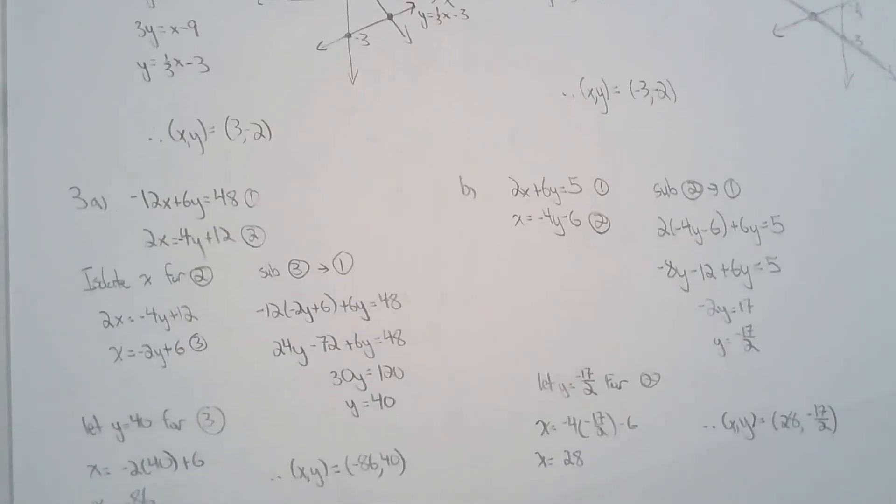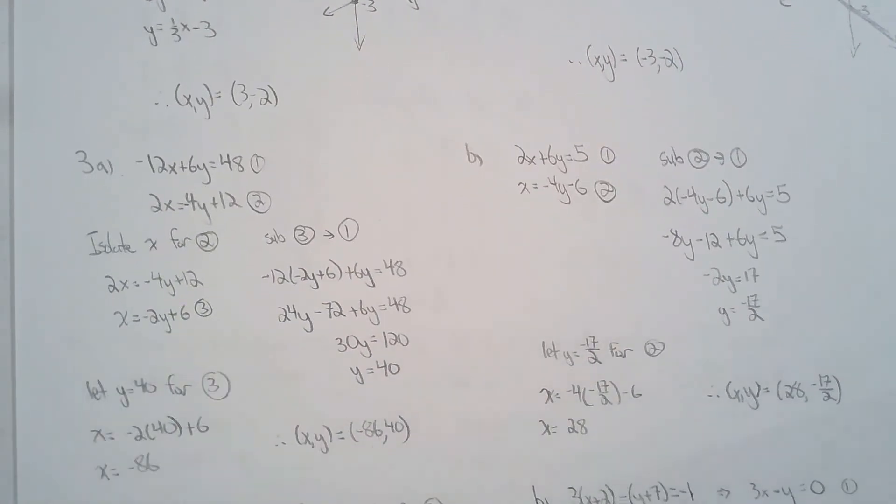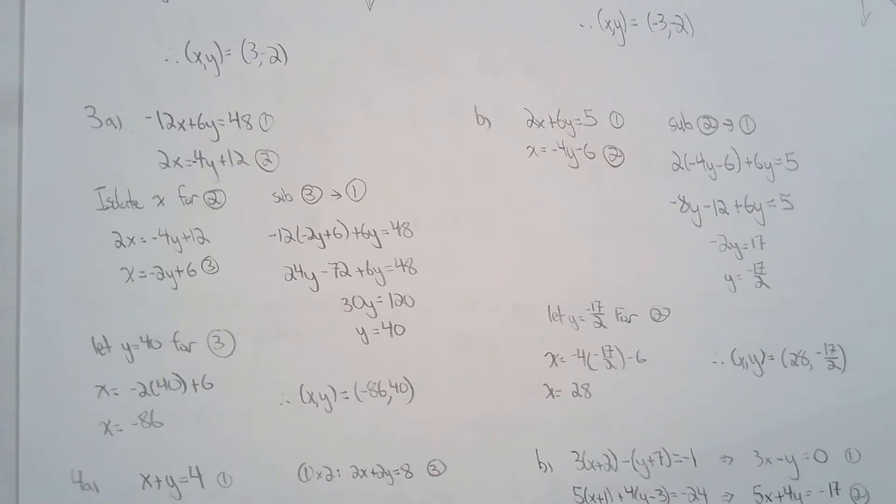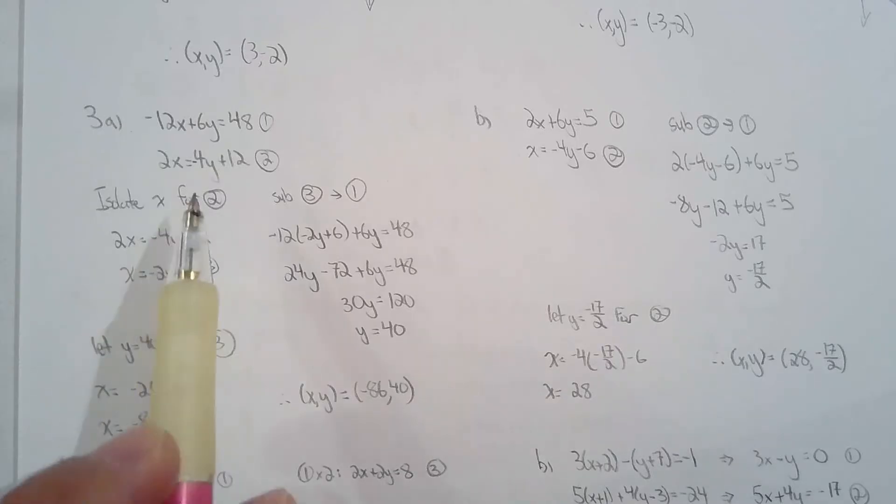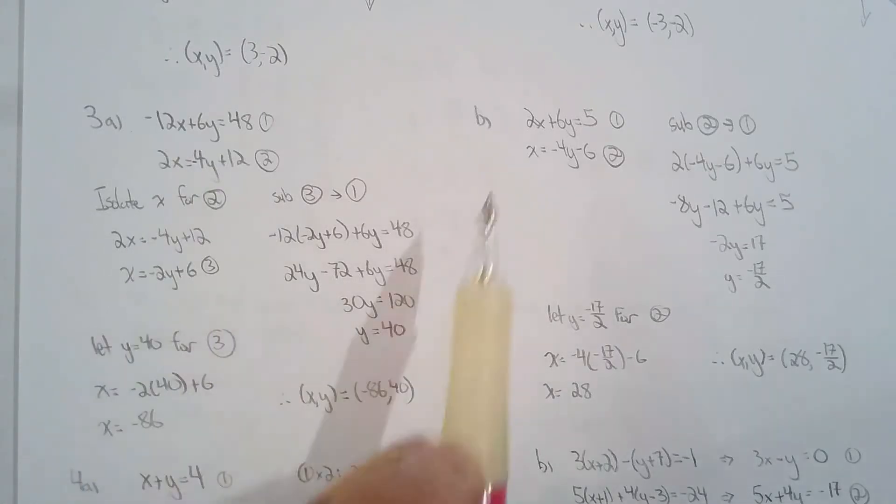For question 3, they wanted me to solve by substitution. So that's what I did. I solved it by substitution. For 3a, you just have to take the second equation, divide by 2, and isolate for x. For 3b, x is already isolated. So that was really nice of the question.